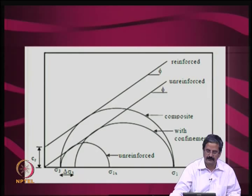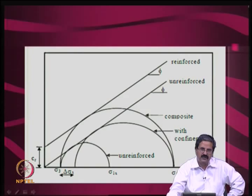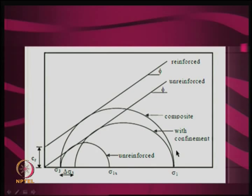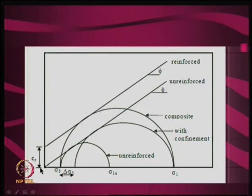Another way to understand what happens when reinforcement is added: compare σ₁ (unreinforced) at a given σ₃ with the reinforced case. When you put reinforcement (confinement), the soil behaves similar to a composite material. Earlier, the friction corresponding to unreinforced soil was the only property. By this process of additional confinement, a cohesion gets developed — called pseudo-cohesion. Earlier it was C = 0, φ = 30°; now there is an apparent cohesion due to reinforcement.